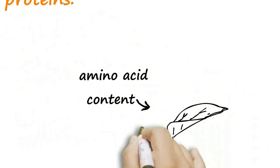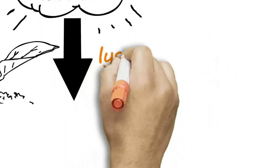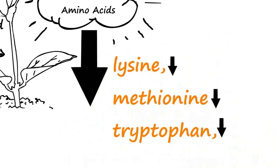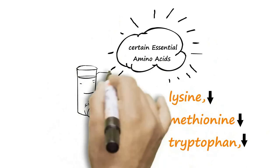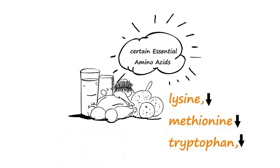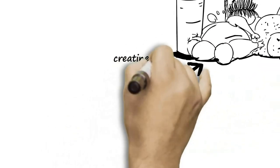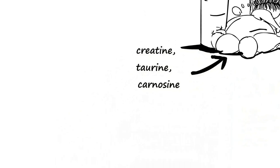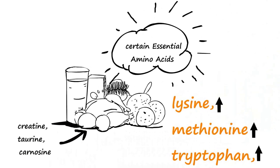The amino acid content in plants is low in certain essential amino acids, such as lysine, methionine, and tryptophan, whereas animal proteins are relatively high in all nine EAAs. The body cannot synthesize EAAs. They must be supplied by diet. In addition, plant proteins lack creatine, taurine, carnosine, and other compounds in animal protein that our bodies really need to accumulate.